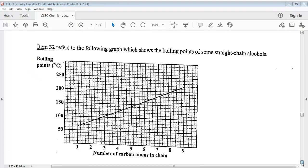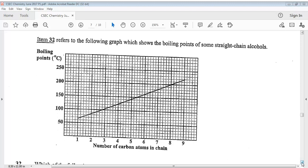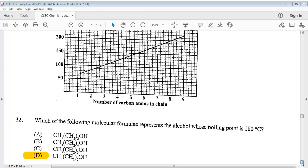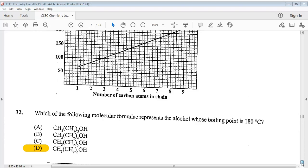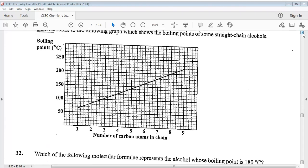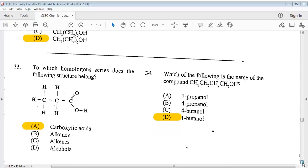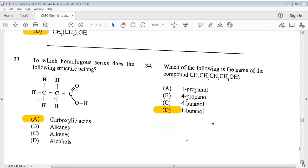So item 32 refers to the following graph which shows the boiling points of some straight-chain alcohols. So you can take a look at the graph as well. So it says, which of the following molecular formula represents the alcohol whose boiling point is 180 degrees Celsius? The answer is D. So you can always go back on the video to look at it. So the answer is D. So you can take a look at question 33. So to which homologous series does the following structure belong? You can take a look at the structure. And the answer for 33 is A.